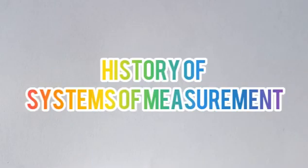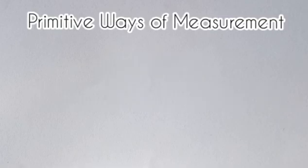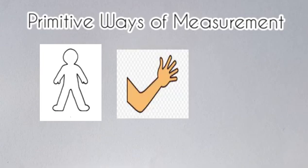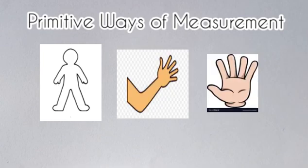Today let's talk about the history of systems of measurements. These are the primitive ways of measurements. Man turned first to parts of his body and his natural surroundings in his quest for measuring instruments. The length of a foot, the width of a finger, and the distance of a step were all accepted measurements.